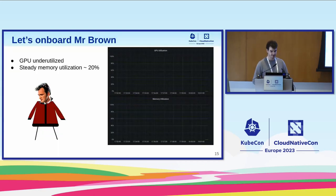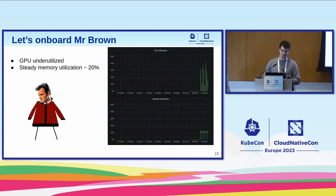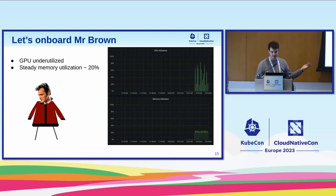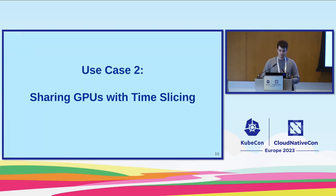Let's onboard Mr. Brown. When using the GPU, Mr. Brown does not really take advantage of it — the GPU utilization is on average 10–20% at best. We can clearly see it would be nice to share this GPU with other users. To do this, we're going to set up time slicing.